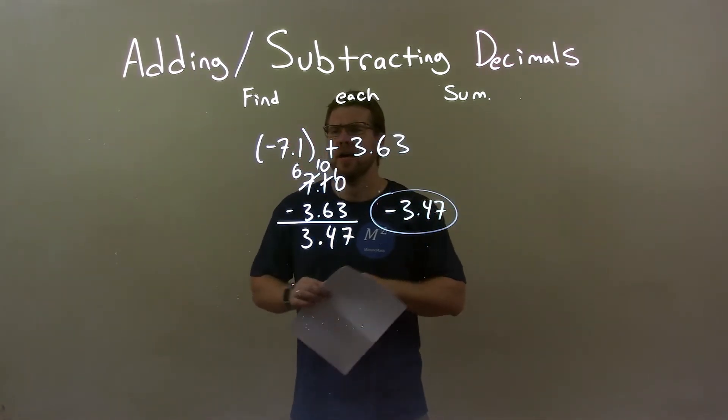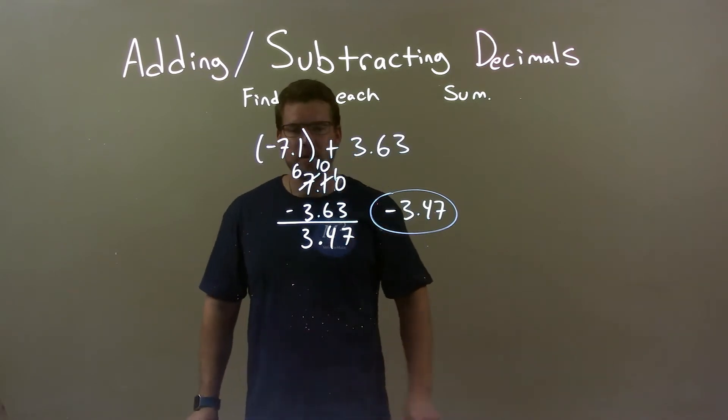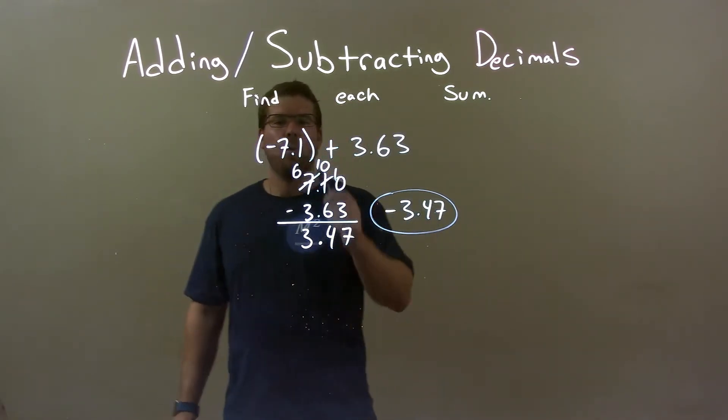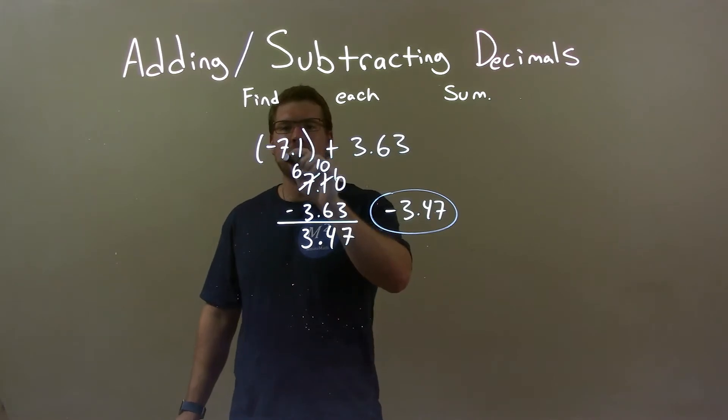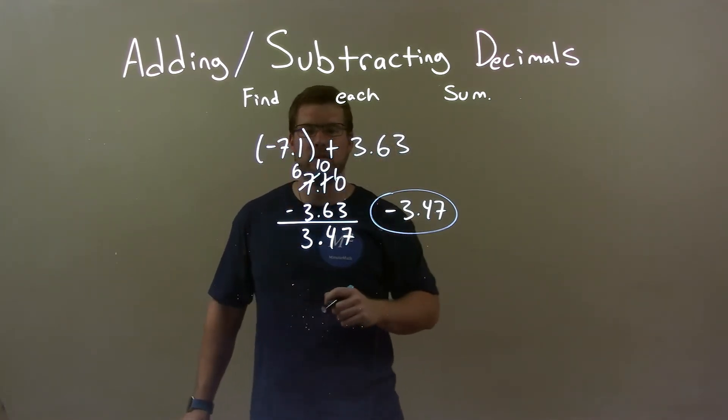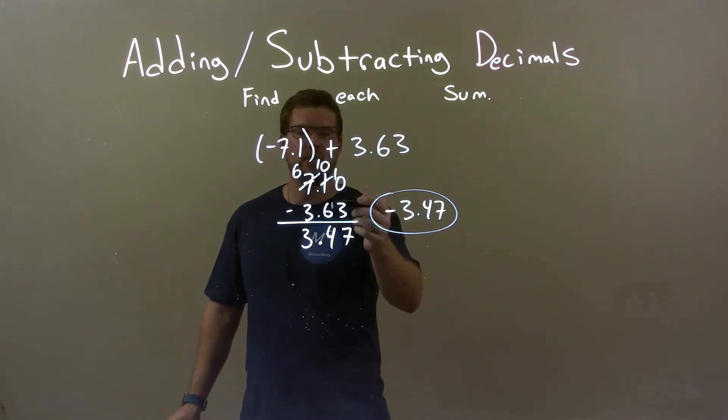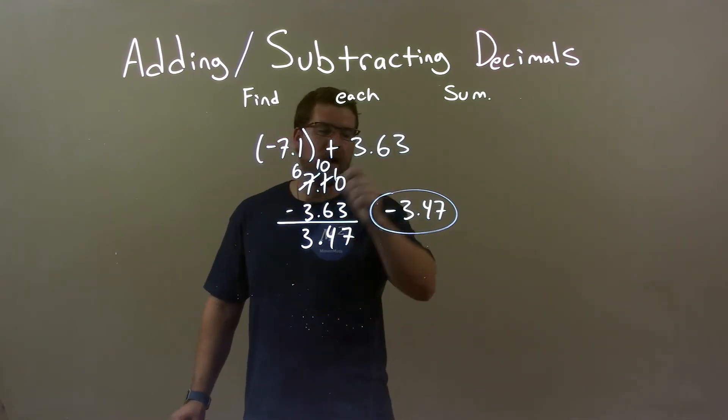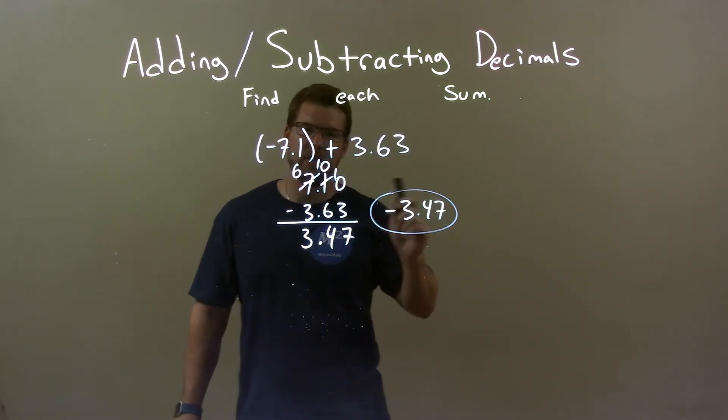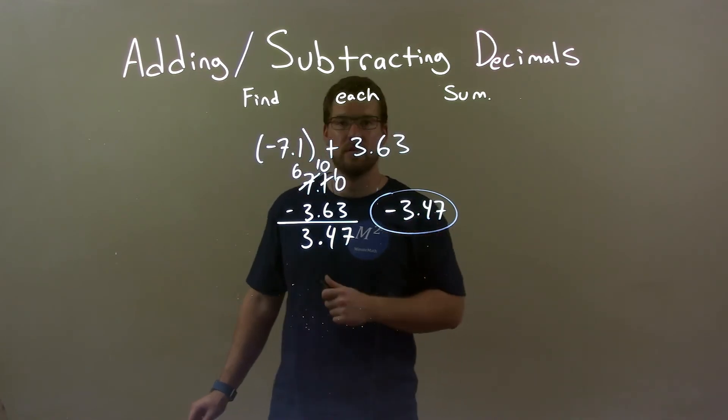So, quick recap. We have a negative 7.1, and we're adding 3.63 to that. Well, what I want to do here, just seeing that negative 7.1 was larger after the absolute value than 3.63, I just found the difference between the two. After I found that difference, I got 3.47. I knew that this was more negative than this was positive, so I had to put on a negative there. And so, again, our final answer is negative 3.47.